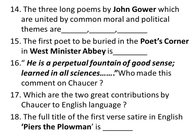The three long poems by John Gower, united by common moral and political themes, are Confessio Amantis in English, Vox Clamantis in Latin, and Speculum Meditantis in French. They all deal with the theme of the seven deadly sins. John Gower got the name 'Moral Gower' or 'Sage Gower' because of his serious nature.